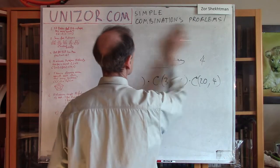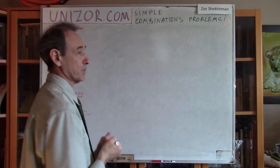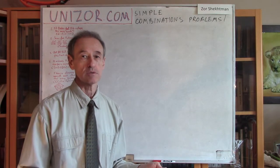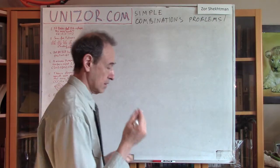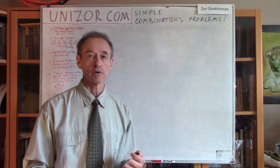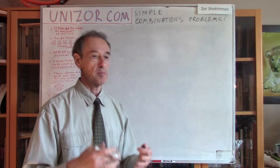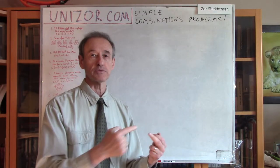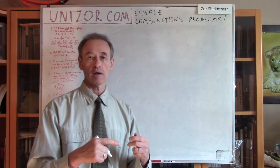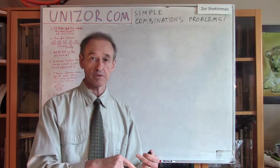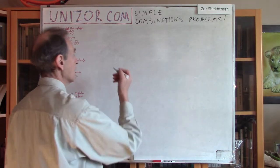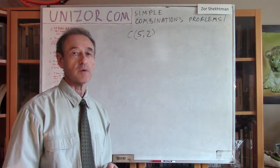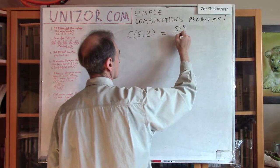Next problem: you have five tennis players, and each pair has to play one match. How many different matches can be played? This is a regular combinations problem — it's the question of how many pairs we can choose from five different players, since every pair constitutes one match and we don't care about the sequence. So the answer is C(5,2), which equals five times four divided by two, giving ten.